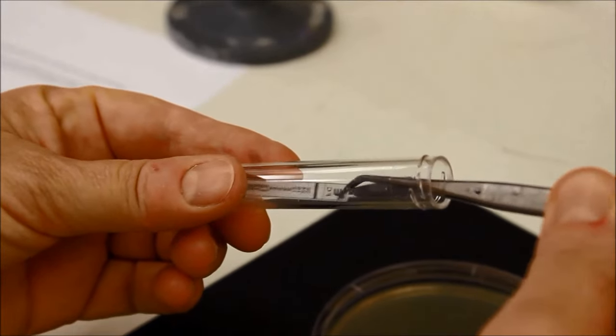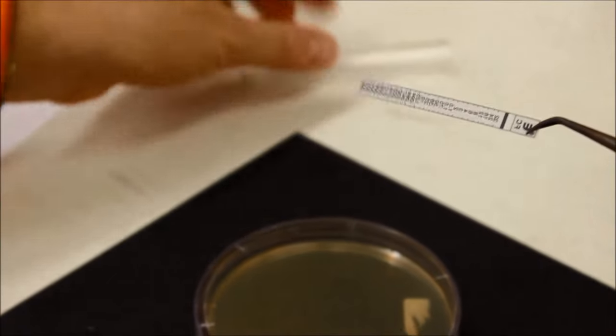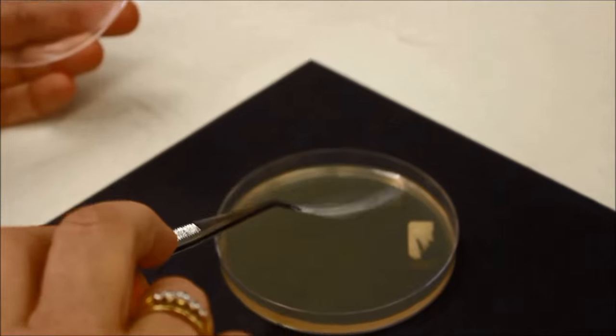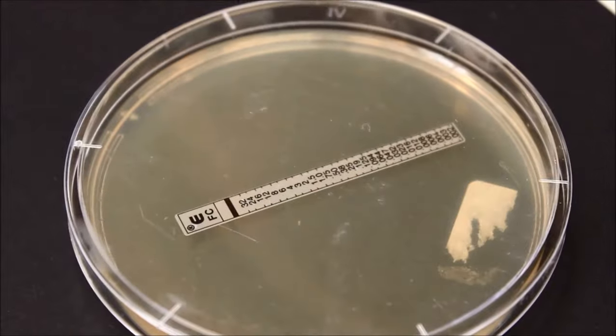Handle the e-test strip with sterile forceps, gripping only the part of the strip labelled E. Apply the strip to the inoculated agar surface making sure the MIC scale is facing up.